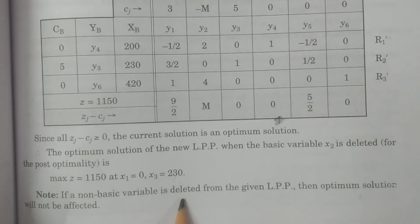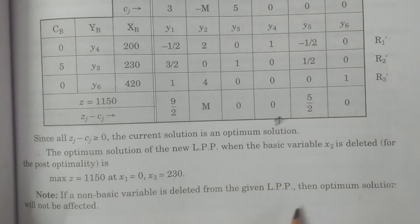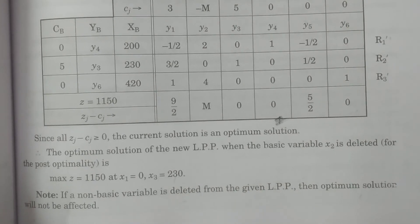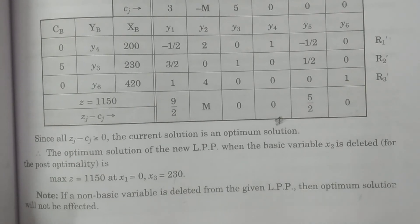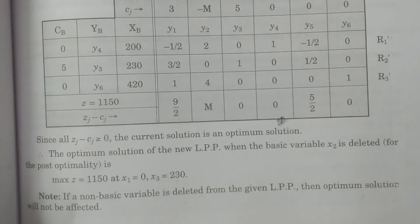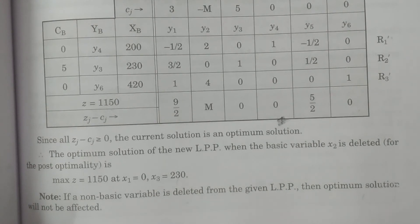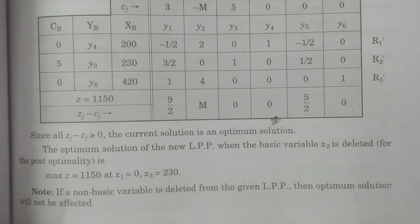It is a non-basic variable and then the optimum solution will be affected. That's why we don't have a problem. We can answer in one step: the optimum solution will not be affected since it is a non-basic variable. So this is the deletion of a variable. Structural changes are allowed in post-optimal analysis. I hope you understand. Thank you very much.